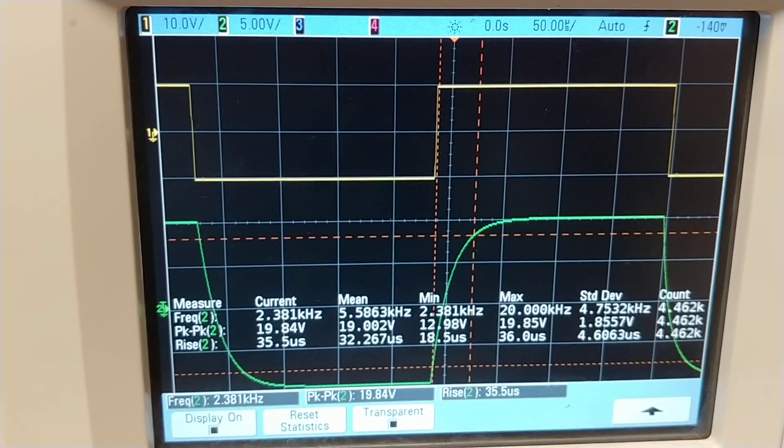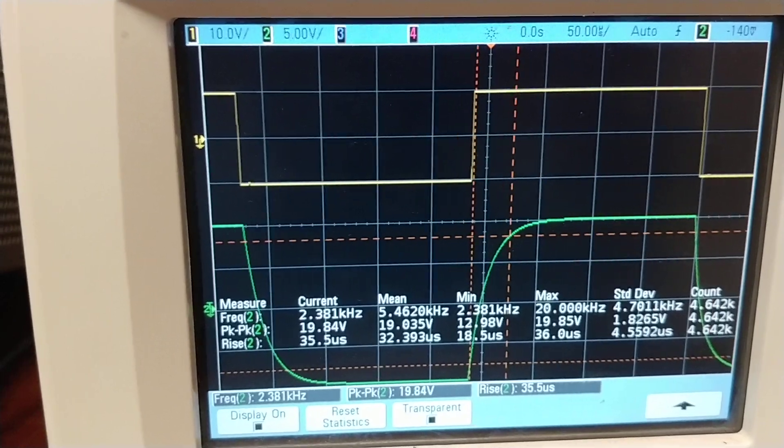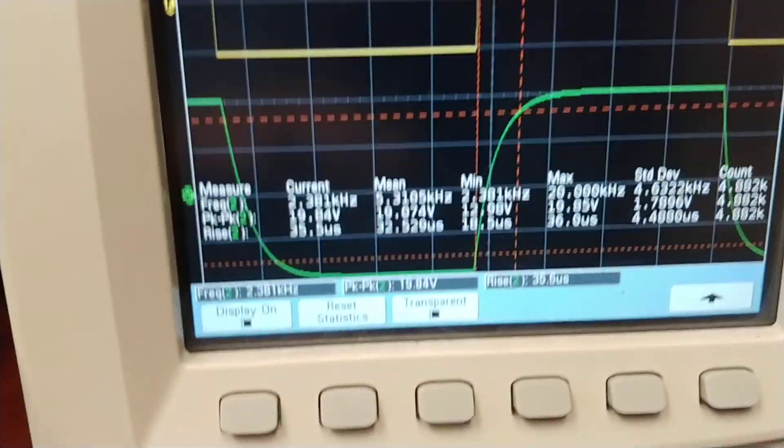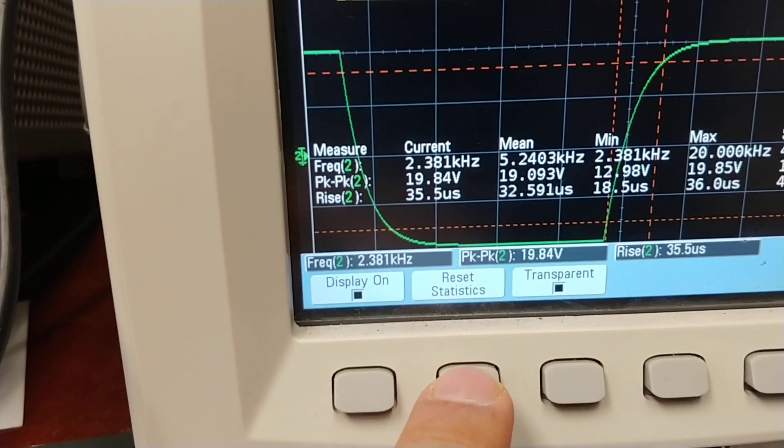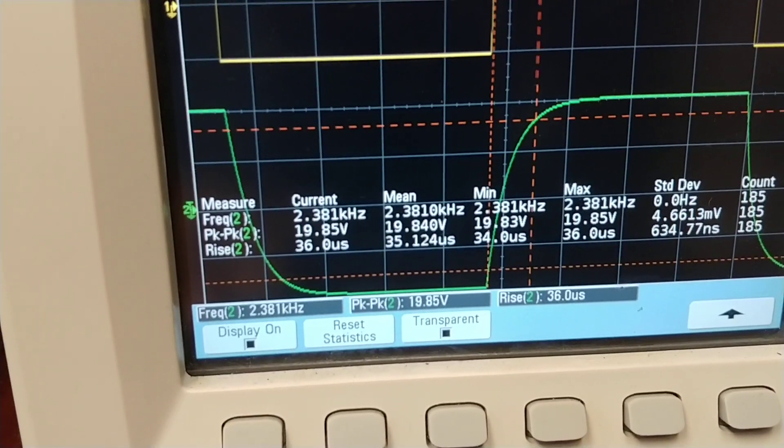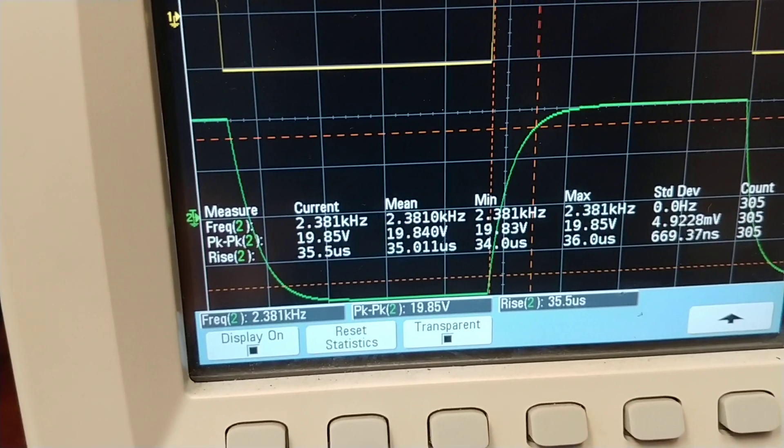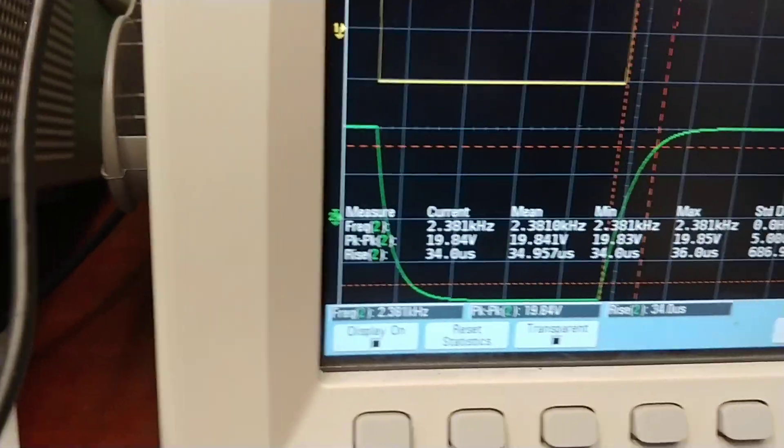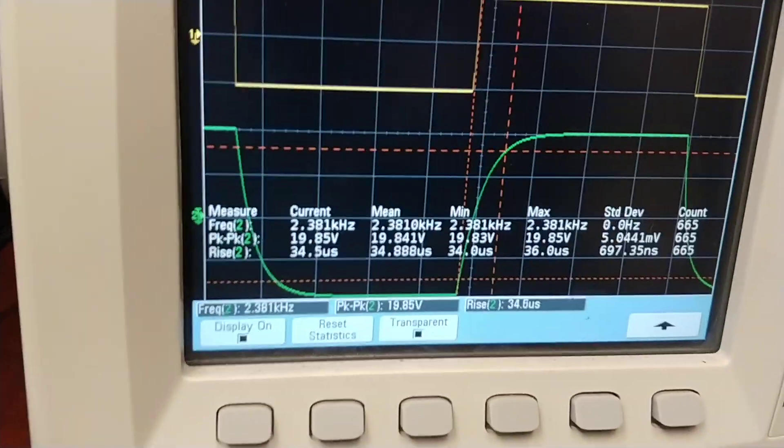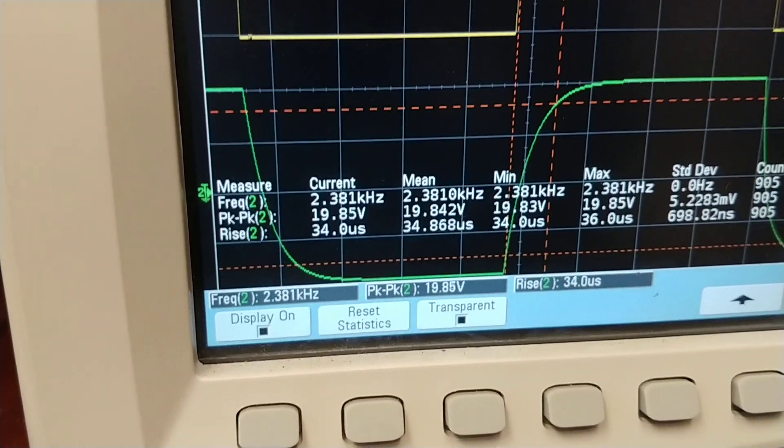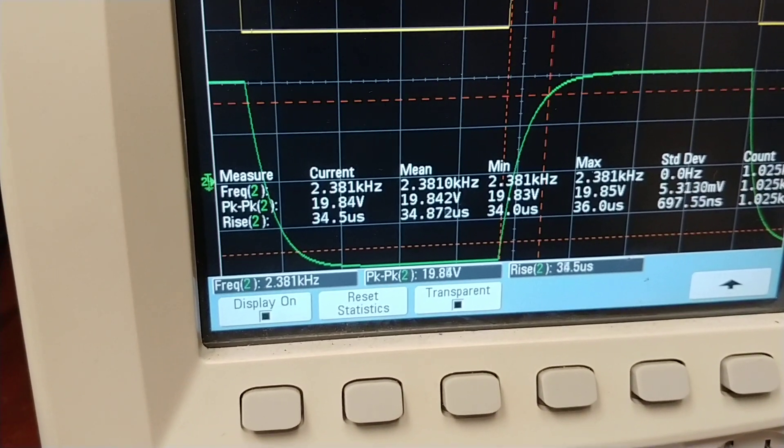You actually want to go for a lot longer than 5 tau, maybe 7 or even 8 tau for the rise time measurement to work. Now just before we move on, I want to reset the statistics. I'm getting a mean of 35 microseconds, so if I multiply that by 0.455 and take the inverse and divide that by 2 pi, I get 999 Hertz.